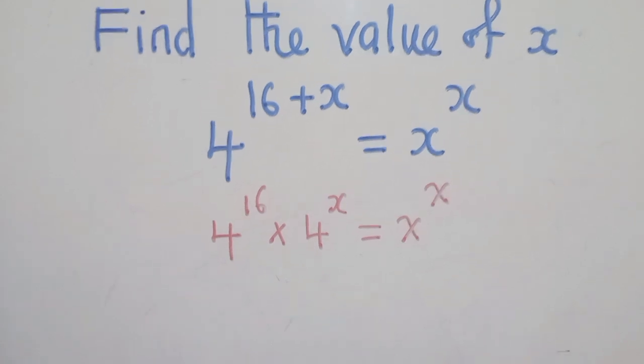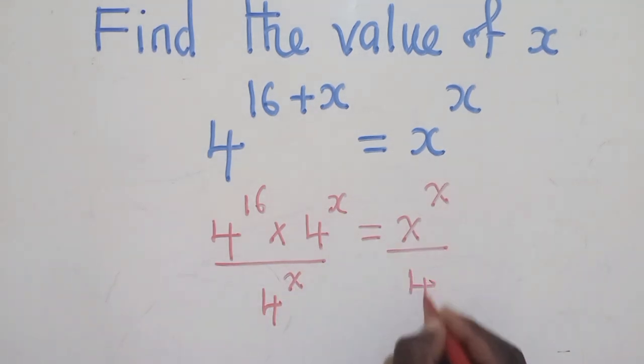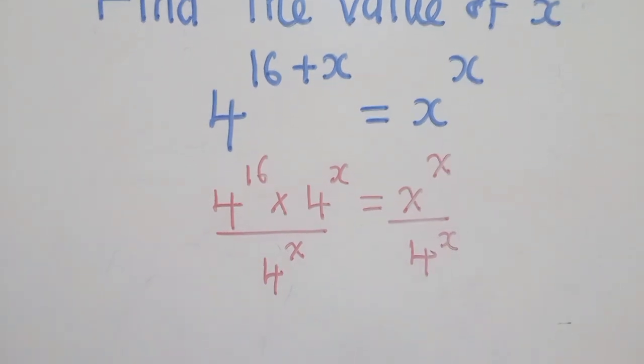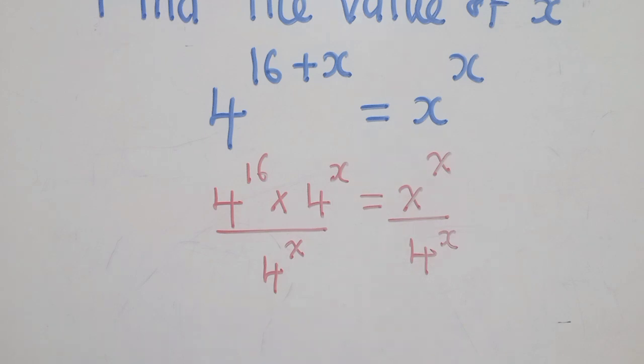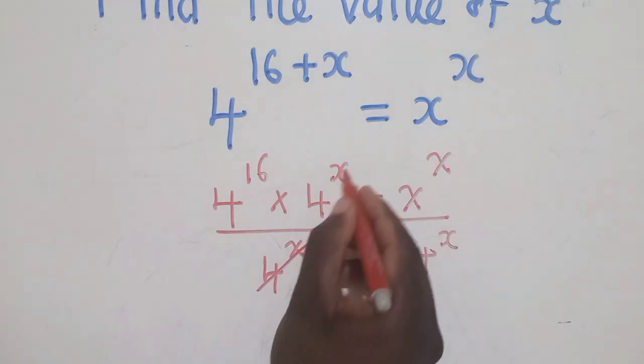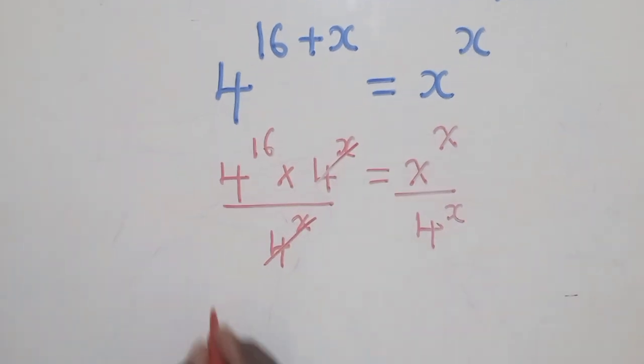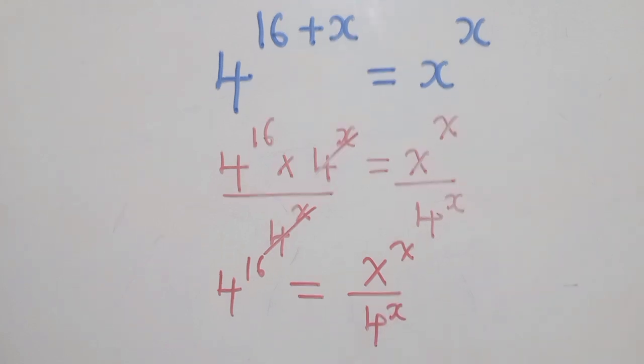After that, we now divide both sides by 4^x. This is because we want to make sure that we've got terms with x involved to one side of the equation, so this and this will go. We shall have 4^16 is equal to x^x over 4^x.